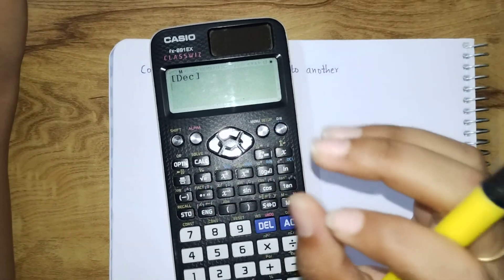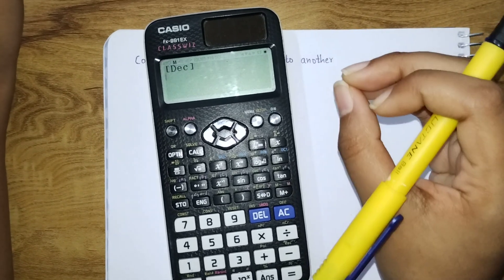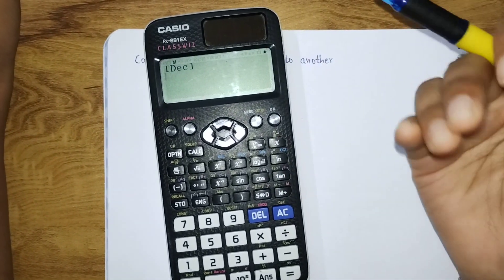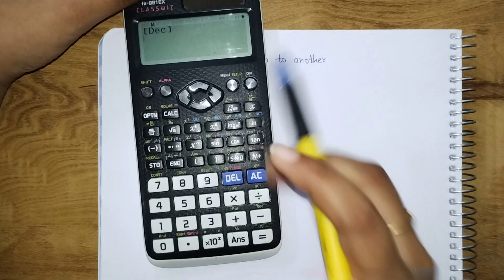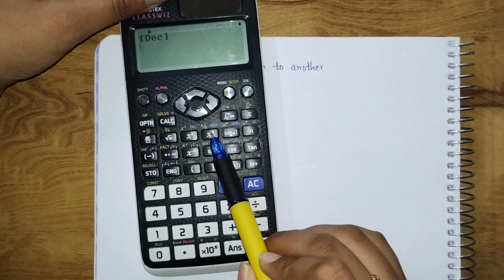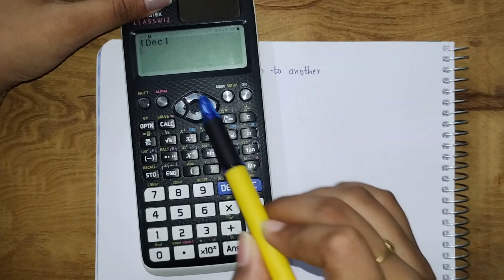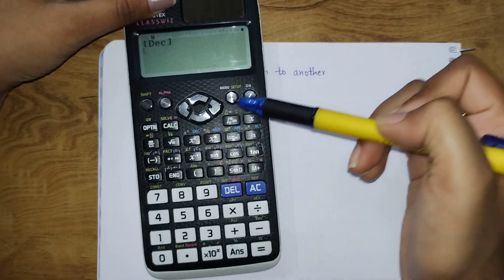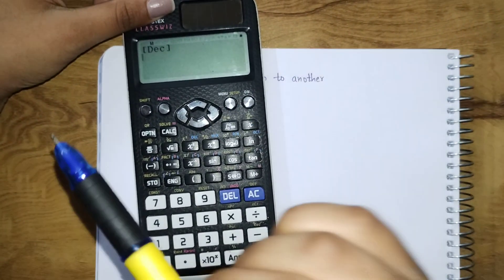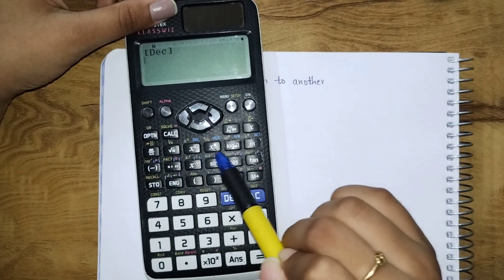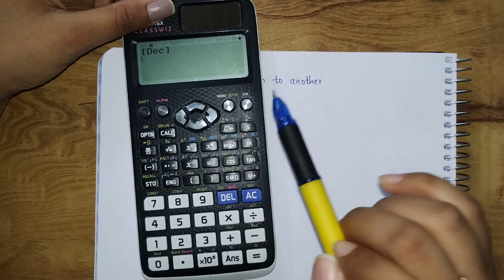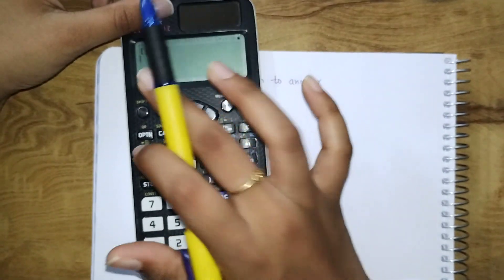By default it is always in decimal form. If we need to convert it into other forms, see here - hexadecimal, binary, octal. When we go to menu setup and change our settings to base n, we can access all these options. Currently it is in decimal form.